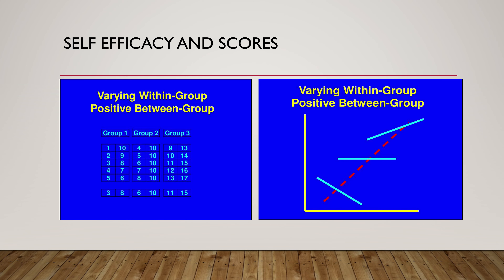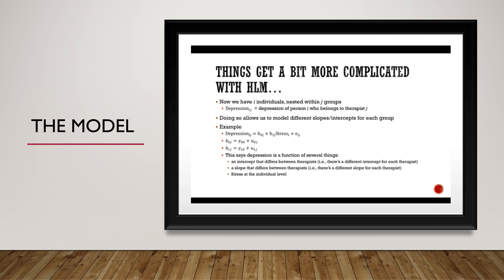The model gets a little complicated. Let's say we're measuring depression — or anxiety, same idea. So anxiety of person I who belongs to therapist J. By doing HLMs, we allow different slopes and different intercepts for each group. The model is: depression_IJ equals intercept B0J plus slope B1J times the stress of that person, plus an error component.